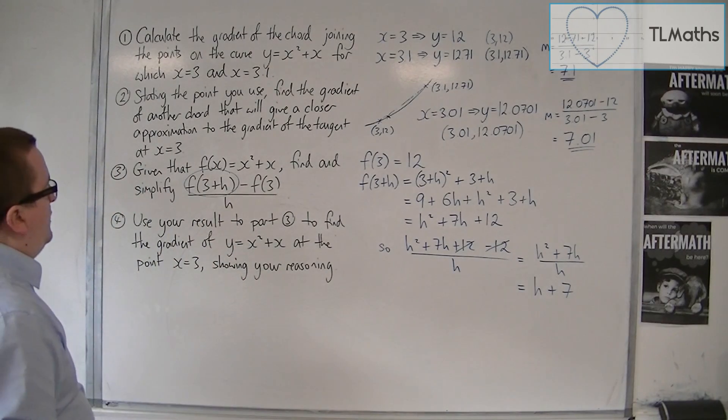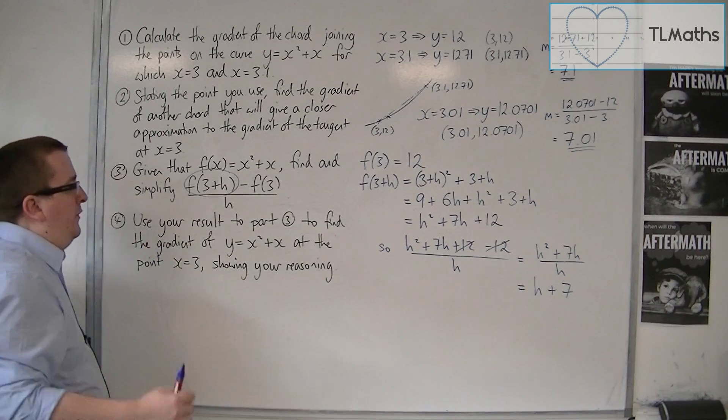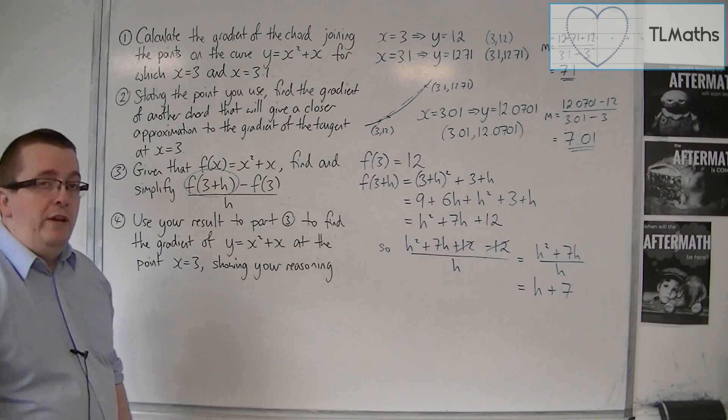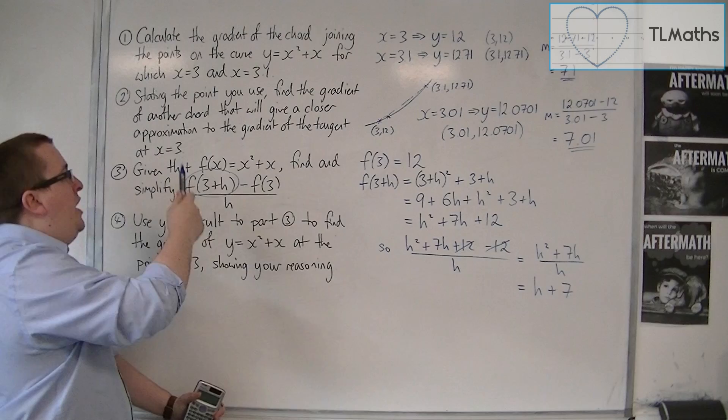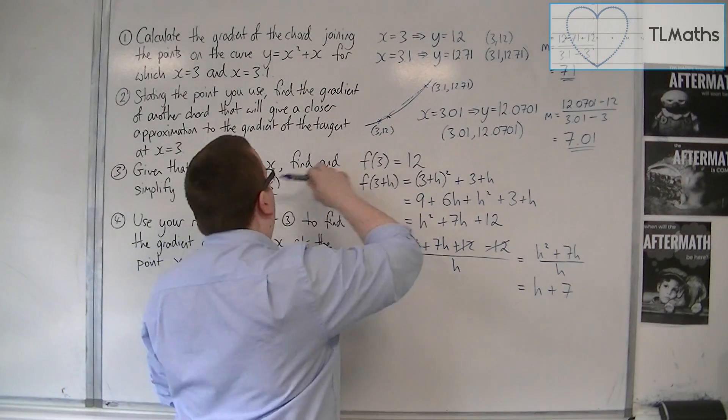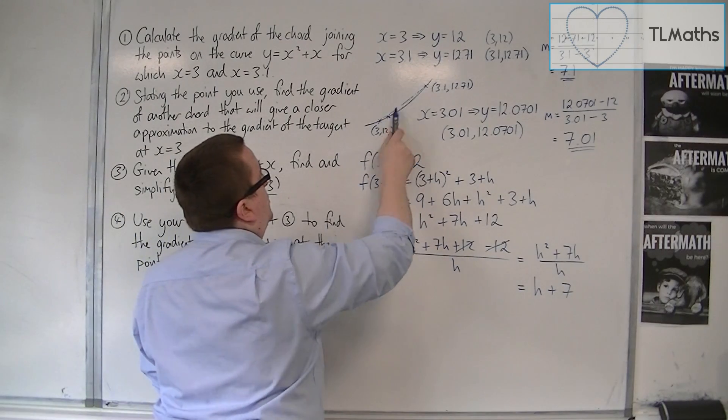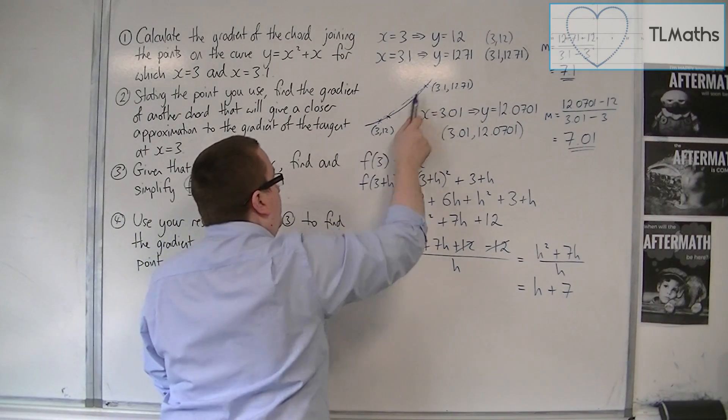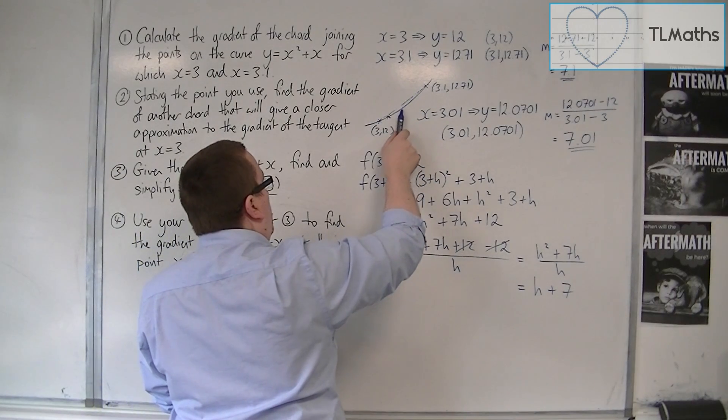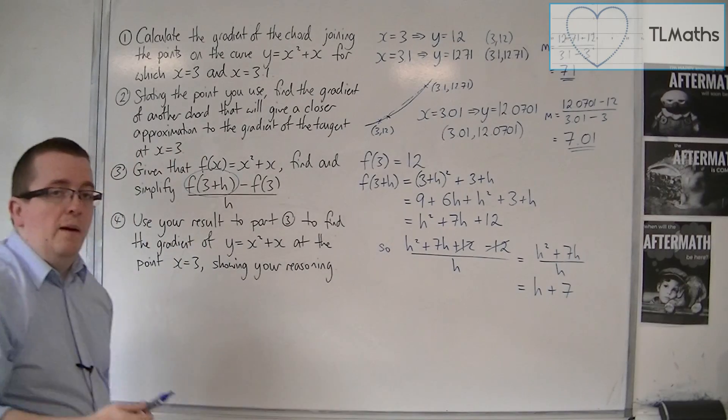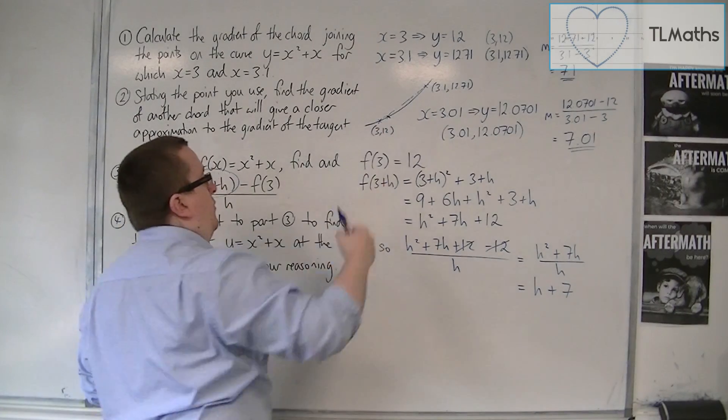Use your result to part 3 to find the gradient of y is equal to x squared plus x at the point x equals 3, showing your reasoning. Now, what this has done is found the gradient of the general chord that goes from that point to any point that's on that curve. And as h gets smaller and smaller and smaller and smaller, I am going to get a more and more accurate gradient of the tangent at 3, 12.